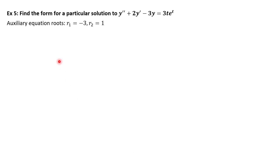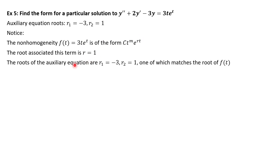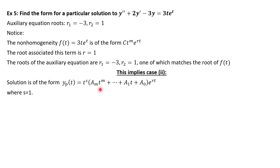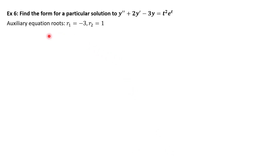Example 5 is similar. The non-homogeneity has the form t·e^t, so r = 1 (the invisible coefficient). Comparing to our auxiliary roots, r = 1 matches — so this is case 2 again. With m = 1, r = 1, s = 1, we plug into our solution format and simplify to get our final answer.